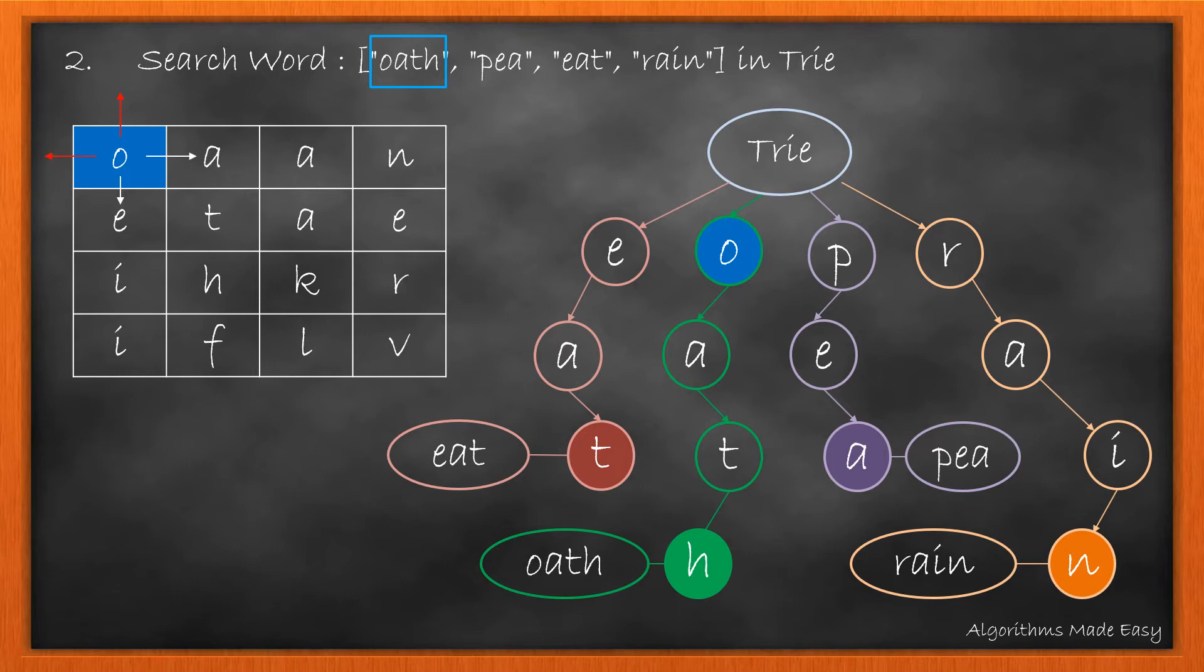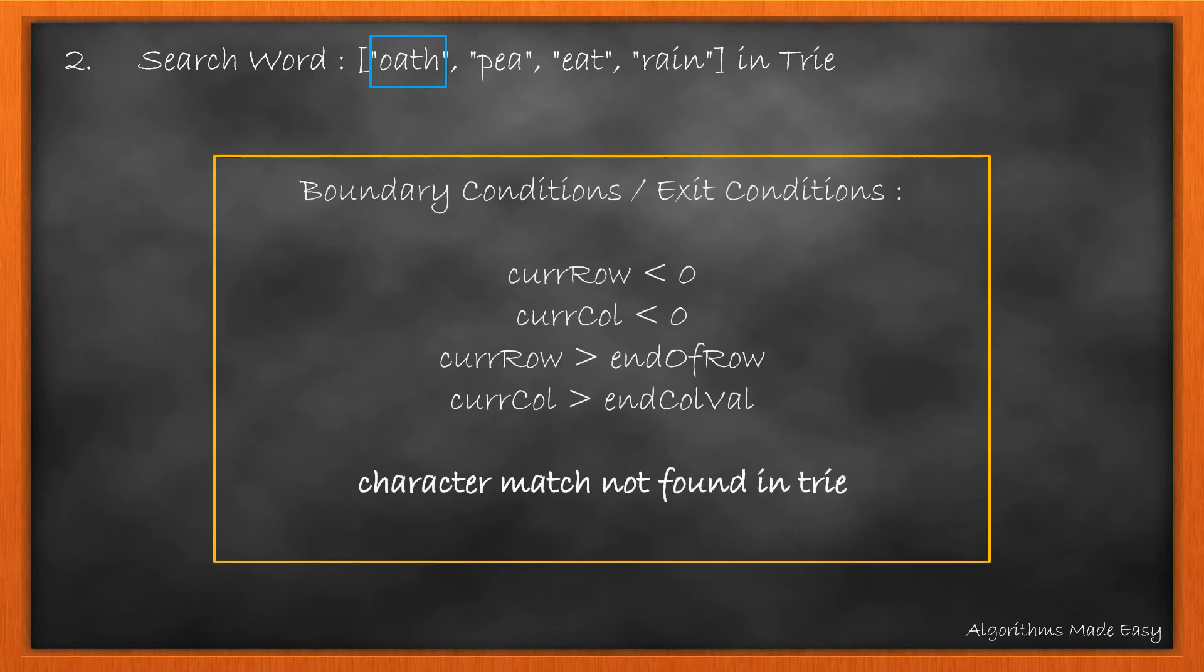But as the arrows marked in red are outside the board, they will get eliminated in our boundary conditions. So, let's take a look at the boundary conditions. The first four points denote the lower and upper bounds for the board, and the last one denotes the exit condition for character not found in the Trie.